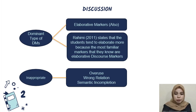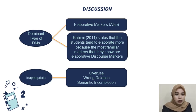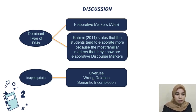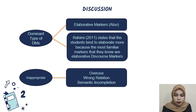We come to discussion. The dominant type of DMs was elaborative markers, or 'also' markers. According to Rahimi, students tend to elaborate more because the most familiar markers they know are elaborative discourse markers. The inappropriateness found in this research were overuse, wrong relation, and semantic incompletion.